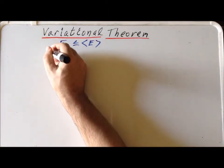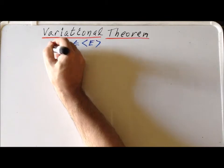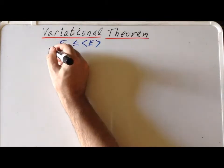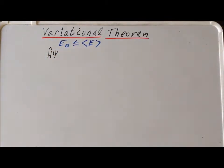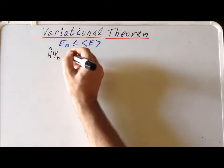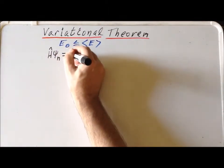Let's assume that we have an operator, the Hamiltonian, and it operates on a whole series of eigenfunctions psi sub n with eigenvalues e sub n.